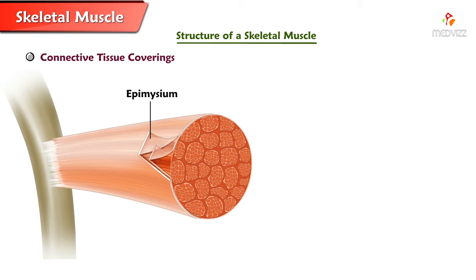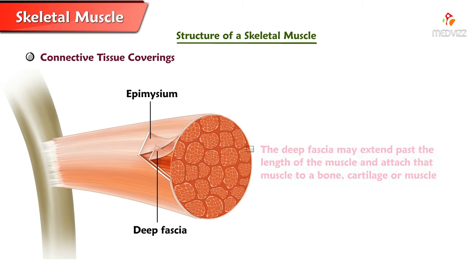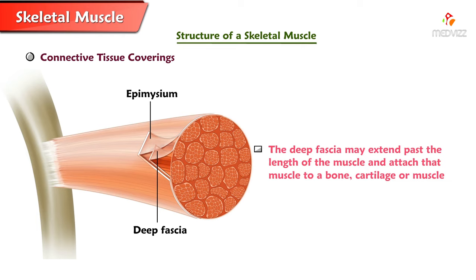Each skeletal muscle is then covered by a fourth, very tough, fibrous layer of connective tissue called deep fascia. The deep fascia may extend past the length of the muscle and attach that muscle to a bone, cartilage, or muscle.